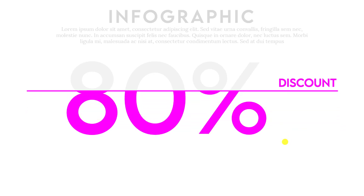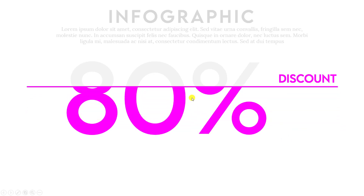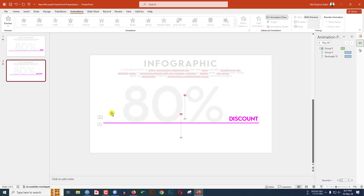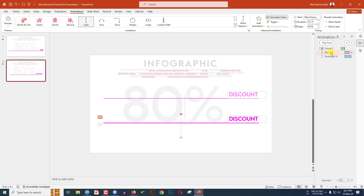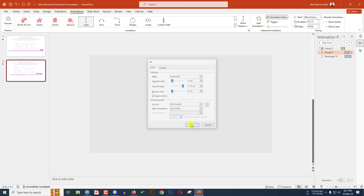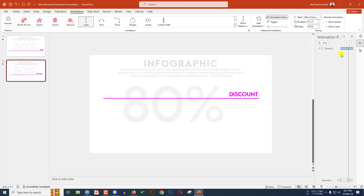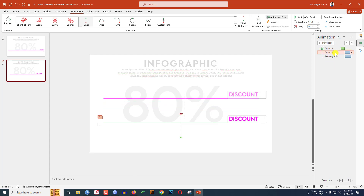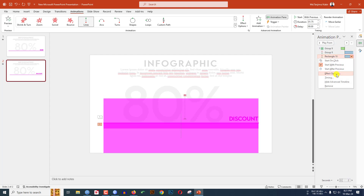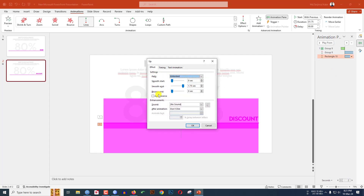Now let me watch the slideshow for this slide. You will see this is looking beautiful. To make it reverse, I have to change something. Let me select this one, go to Effect Option, and click on Auto Reverse. Do the same thing for this one — Effect Option, click on Auto Reverse.